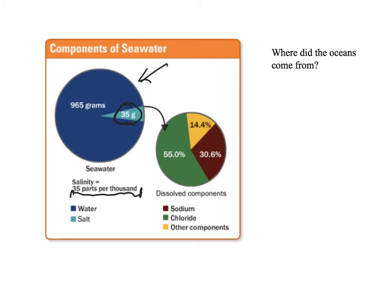So that means if I have a thousand grams, 35 grams of that is going to be salt. Remember that this is by mass, not by volume or amount — strictly by mass. When we look at that 35 grams, we can break it down in another pie chart: 55% is going to be chlorine, 30% is going to be sodium, and then there's about 14% that's going to be other materials. If we take sodium and chlorine together, we make sodium chloride, which is table salt or sea salt. So most of this particulate stuff inside the water that we call salinity is called that because it's going to be salt.